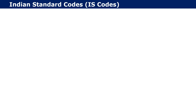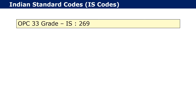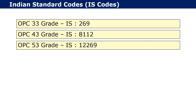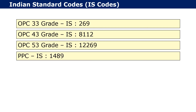The IS Code used for OPC 33 grade cement is IS 269. For OPC 43 grade cement it is IS 8112. For OPC 53 grade cement it is IS 12269. Whereas the IS Code used for PPC is IS 1489.